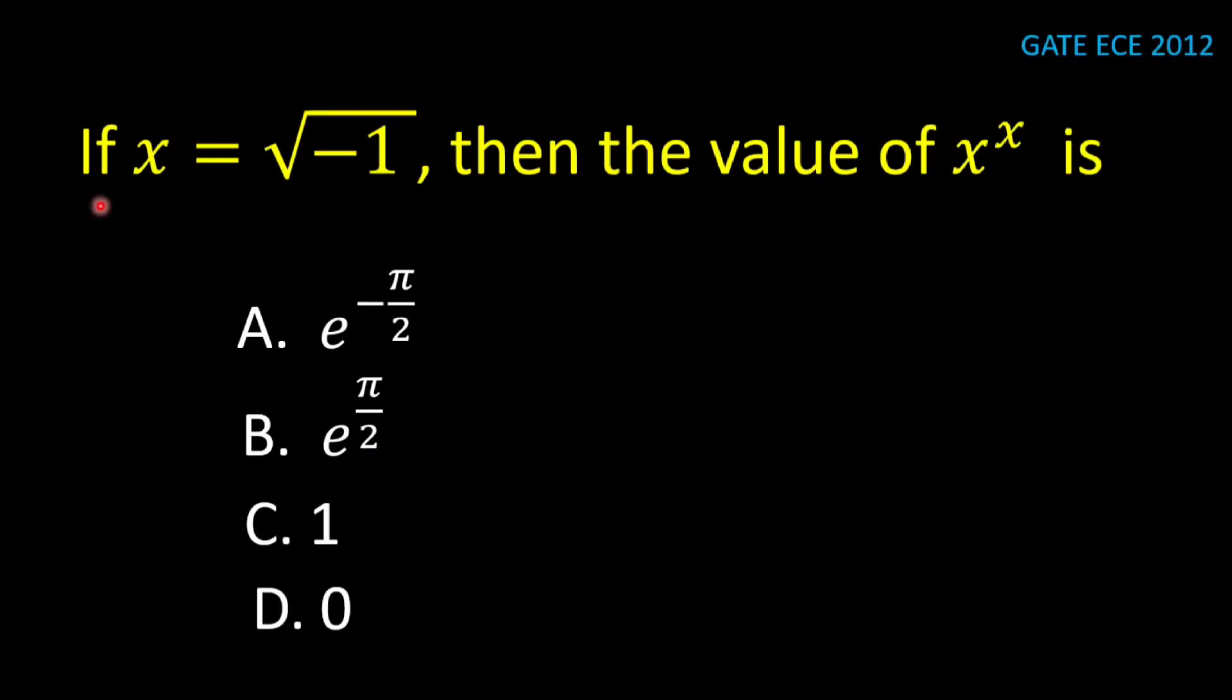In this video, we will solve this problem: if x equals square root of minus 1, then we need to find the value of x to the power x. You can notice that x is an imaginary number, square root of minus 1, and when its power is also imaginary, this is x to the power x.